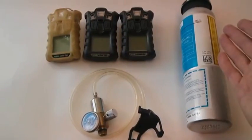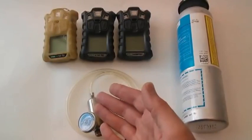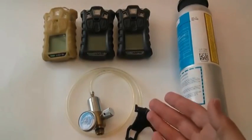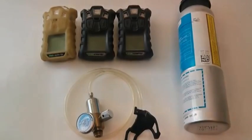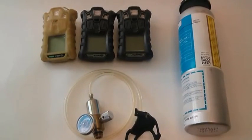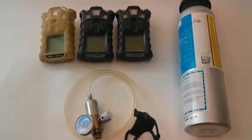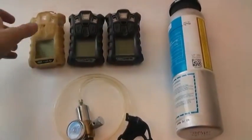And all you've got is your bottle of Calgas, your regulator, and your phase clip, and of course the tubing that came with your Altair 4X. And there in the background we've got our fleet of Altair 4X monitors. So I'm going to go ahead and show you how to do that bump test right now.